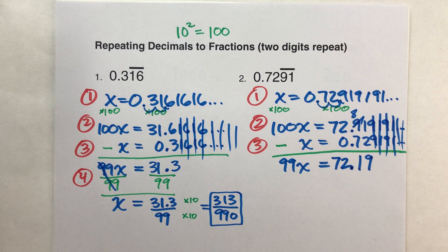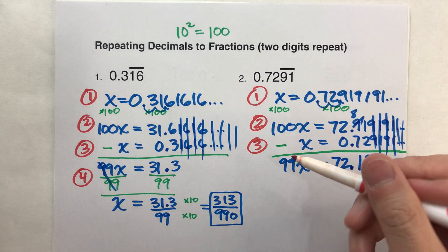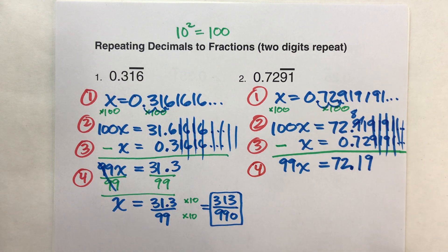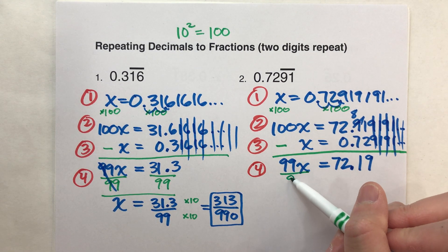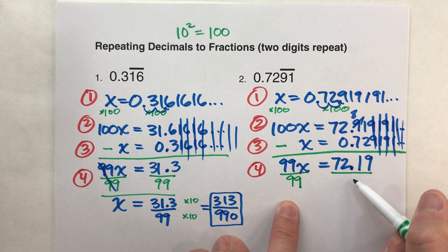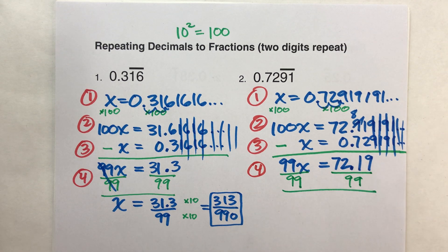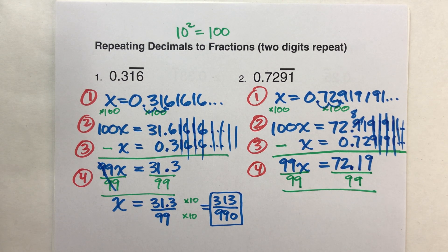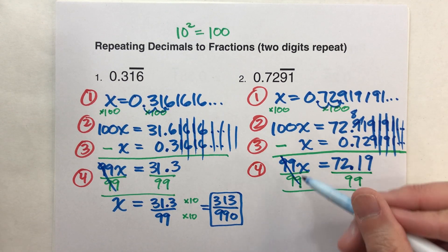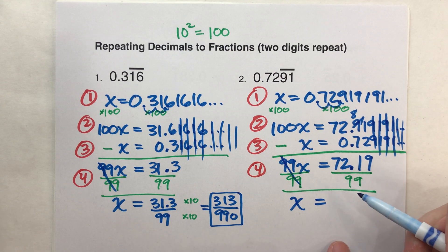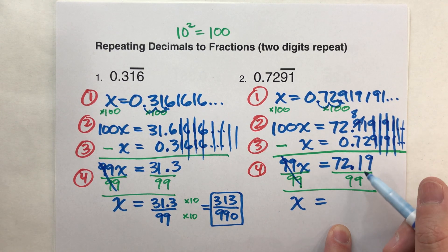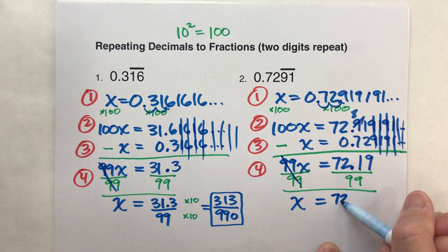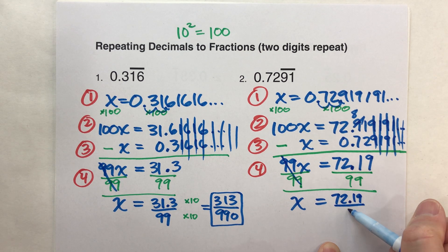Last step, we need to solve for x. We'll use algebra to do this. It says x times 99. I'm going to divide by 99. What I do to one side, I have to do to the other. And when I do that, the 99s undo each other. I'm left with x equals, and I want a fraction, so I'm going to keep it in fraction form. 72.19 divided by 99 is the same as 72.19 over 99.